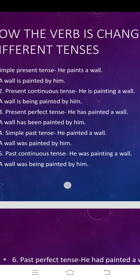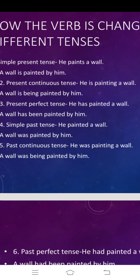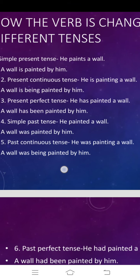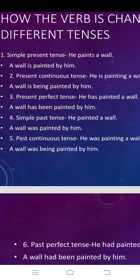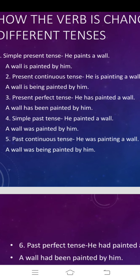Now let us discuss the second tense: present continuous tense. The example is: he is painting a wall. By looking at 'is painting', it is very clear the sentence is in present continuous tense. The formula here is to add 'being'. A wall, again singular, becomes: a wall is being painted by him. In present continuous tense, you have to add 'being' — B-E-I-N-G.